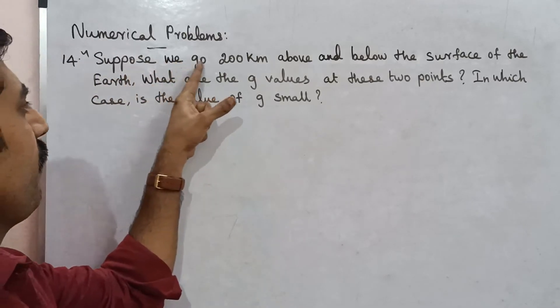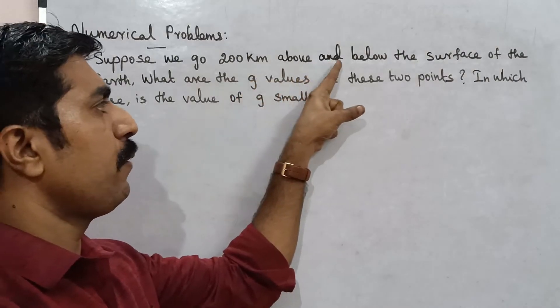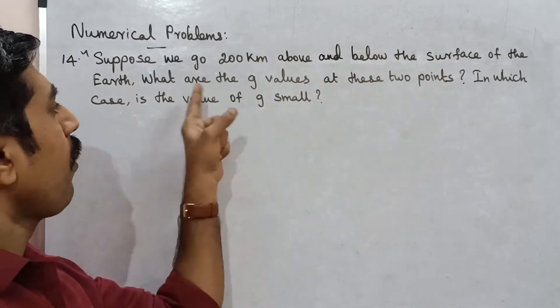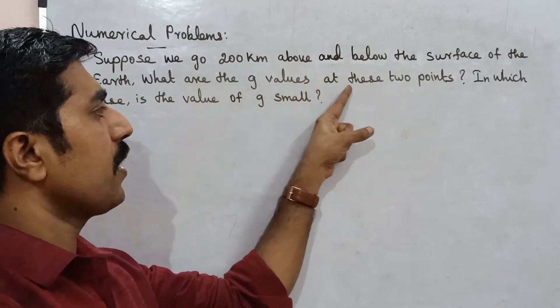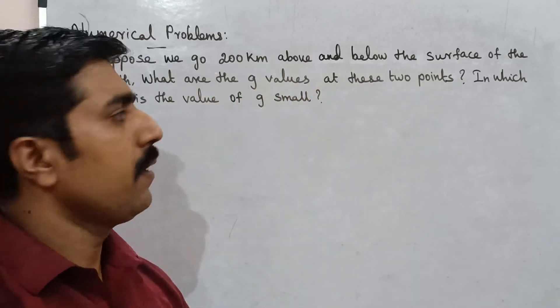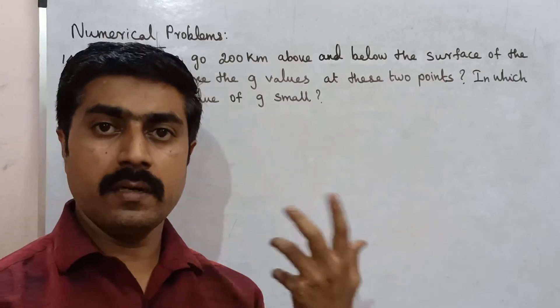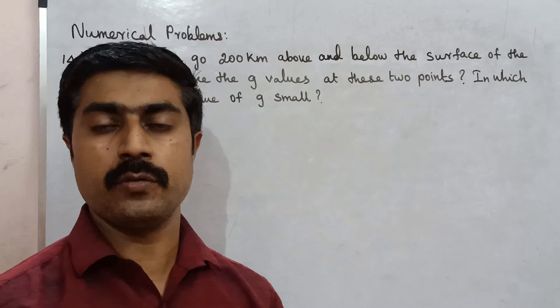Suppose we go 200 km above and below the surface of the earth. What are the g values at these two points? In which case is the value of small g, I mean acceleration due to gravity, smaller?